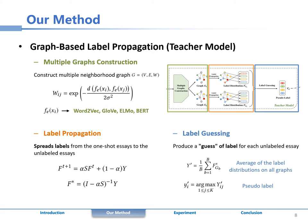Label propagation is used to spread labels from the one-shot essays to unlabeled essays. Label guessing can generate the pseudo-labels of unlabeled essays from the result of multiple graph propagation by averaging the label distribution.